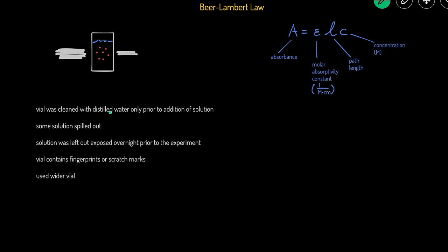Lastly, we'll go over how certain factors affect absorbance — whether it goes up, down, or stays unchanged. First, if the vial was cleaned with distilled water only prior to adding the solution: normally you'd rinse the vial with the solution itself to maintain concentration. If only distilled water was used, residual water dilutes the solution, causing the concentration to go down. Since concentration and absorbance are directly proportional, the absorbance will also decrease.